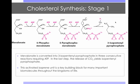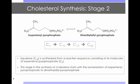Mevalonate is converted into 3-isopentanyl pyrophosphate in three consecutive reactions requiring ATP. In the last step, the release of CO2 yields isopentanyl pyrophosphate. This activated isoprene unit is a key building block for many important biomolecules throughout the kingdoms of life. Things derived from isoprene include vitamin A, also known as retinol, vitamin E, and carotenes.